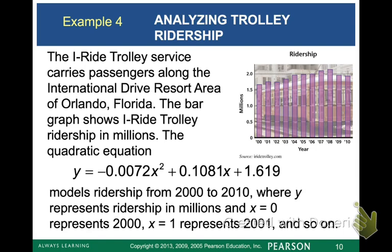The iRide Trolley service carries passengers along the International Drive Resort area of Orlando, Florida. The bar graph shows iRide Trolley ridership in millions. The quadratic equation models ridership from 2000 to 2010 where Y represents the ridership in millions. So that's how many people are riding. And X equals zero represents 2000. X equals one represents 2001. So X is our year but we're not using 2000 for the year. We're using zero or one or two.